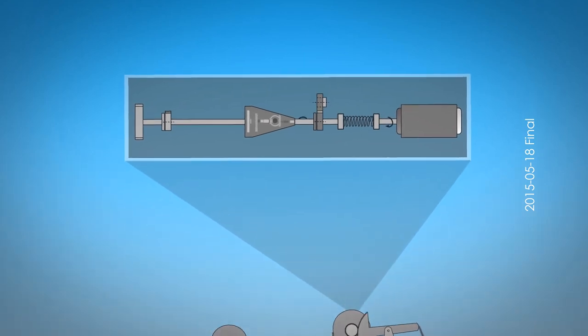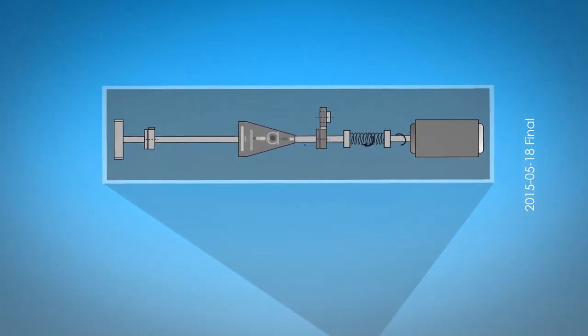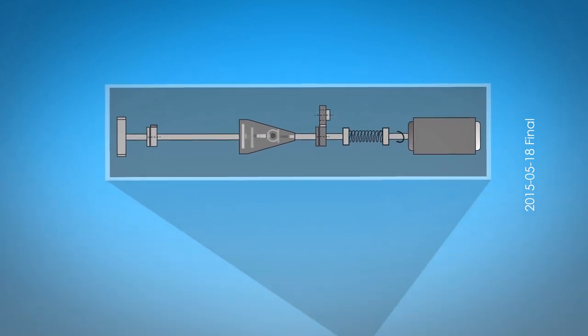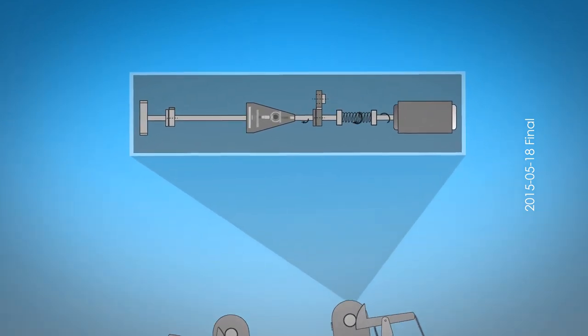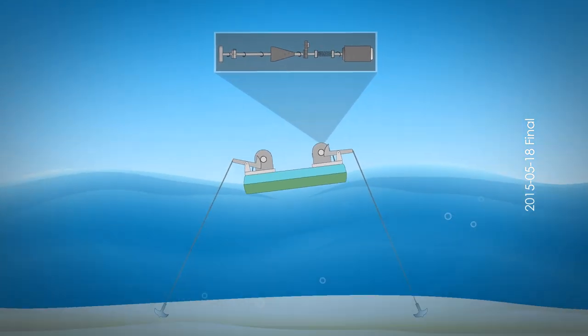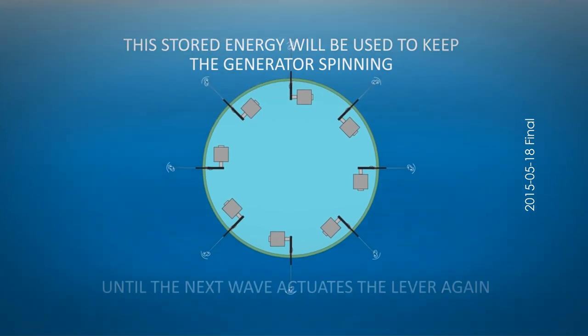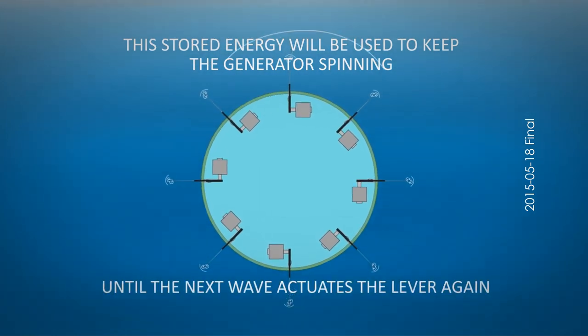Every actuation of the lever arm is transferred to the gearbox via one-way clutch to spring. With help of a one-way locking mechanism, the energy can be temporarily stored into the spring by twisting it. This stored energy will be used to keep the generator spinning all the time until the next wave actuates the lever again.